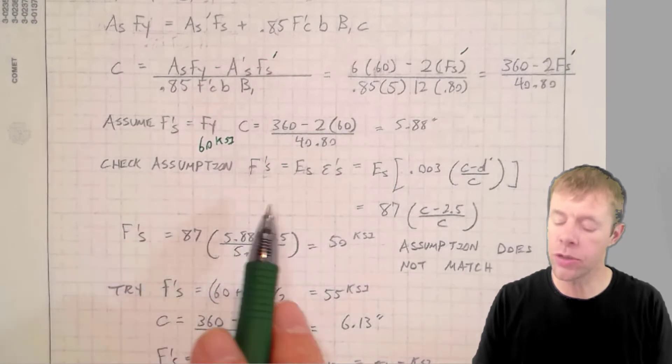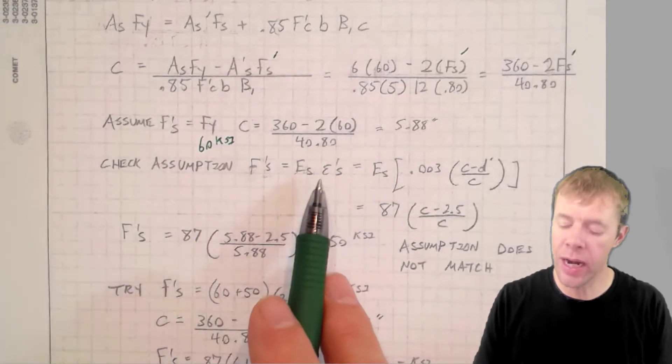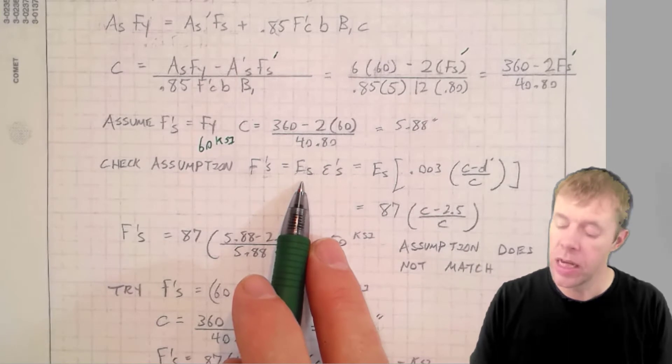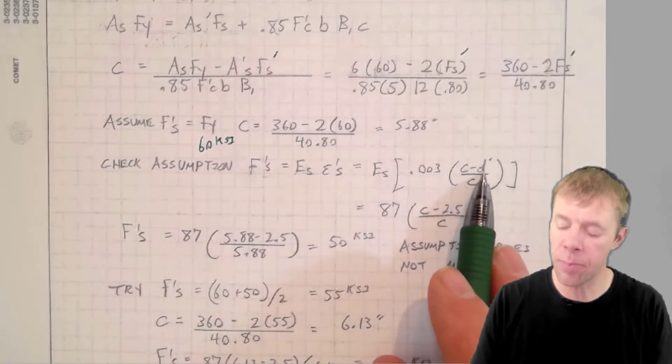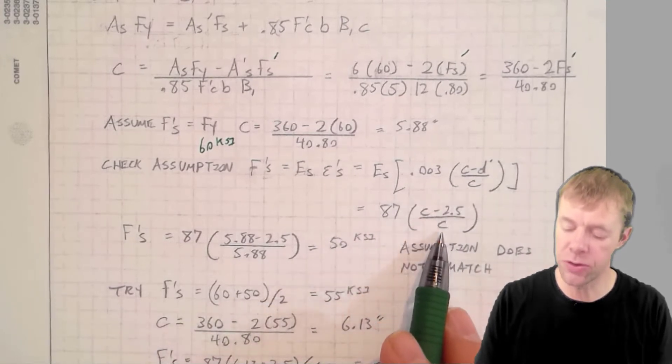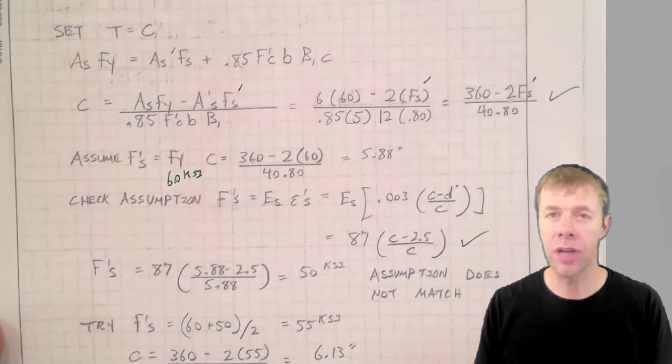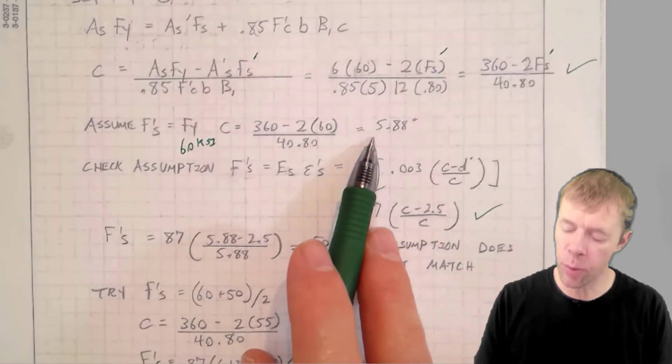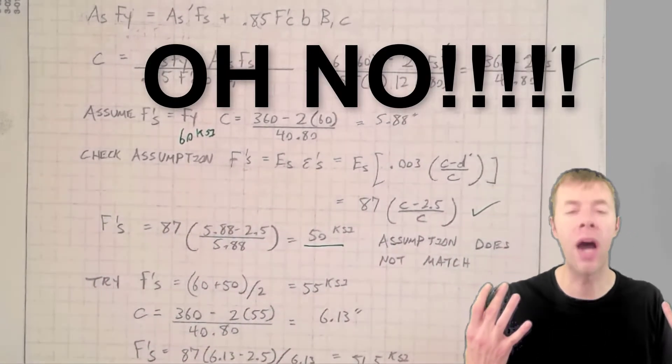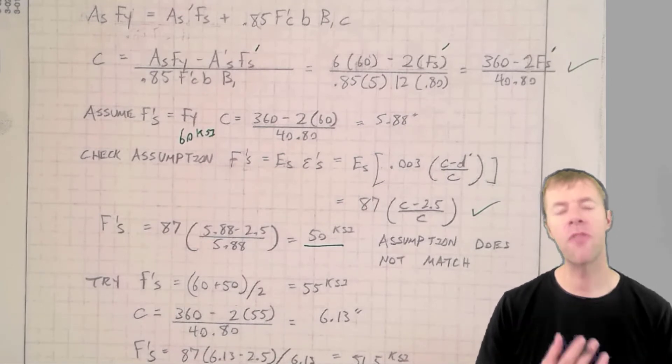Now we're going to check our assumption. We check our assumption by actually finding what the stress would be at this steel. We have to find the strain at the top, the strain at this steel, and multiply by the modulus. Using similar triangles, it would be C minus D prime over C. This is equal to 87 times C minus 2.5 over C. Now it's time to start to iterate. I get 60 KSI, I get 5.88, I put it into this equation. What comes out is 50 KSI. Oh no, it's not right. I made a bad assumption. But it's not that far off.